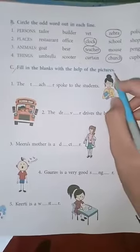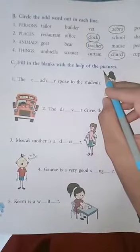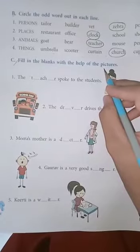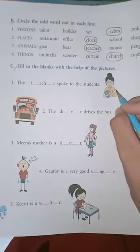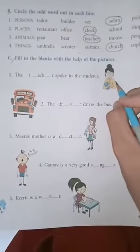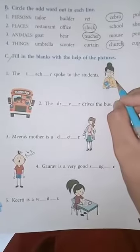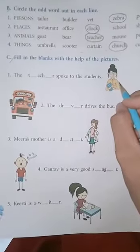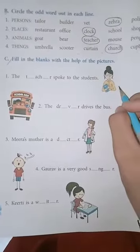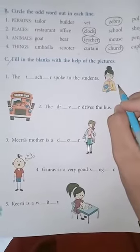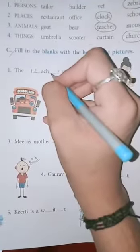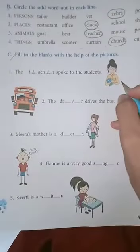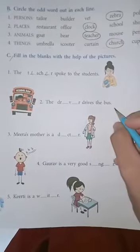Next, we will move to exercise C. Fill in the blanks with the help of the pictures. You have to look at the pictures given and fill in the blanks. The dash spoke to the students — look at the picture — teacher. T-E-A-C-H-E-R. Teacher.